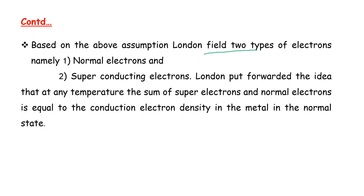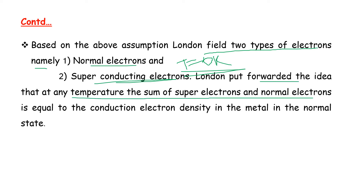Based on the above assumptions, London proposed two types of electrons: normal electrons and superconducting electrons. At 0 Kelvin, London put forward the idea that the sum of superconducting electrons and normal electrons equals the total conduction electron density in the metal in the normal state.